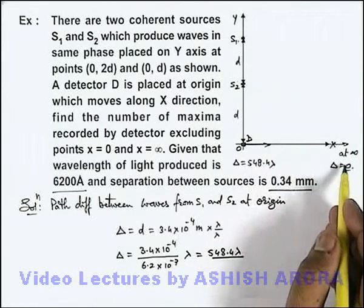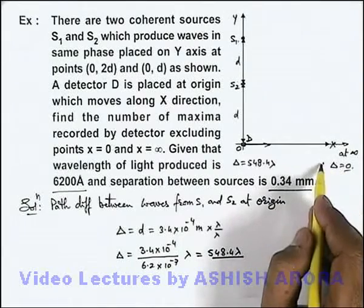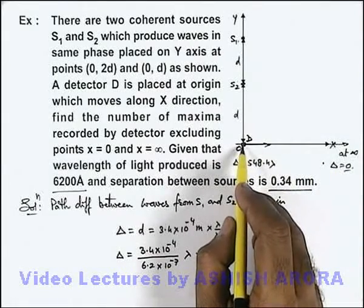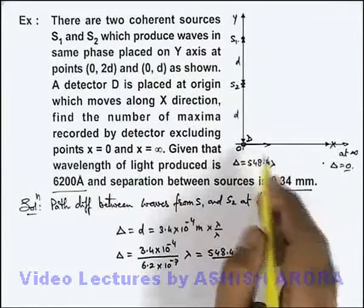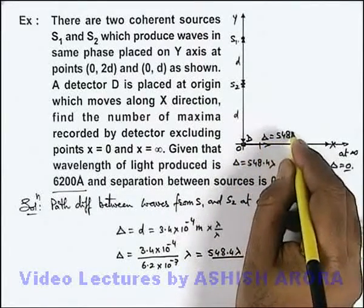So first maxima close to infinity will be the point where delta equals lambda, and the first maxima close to the point x = 0 will be the one where path difference will be 548 lambda.